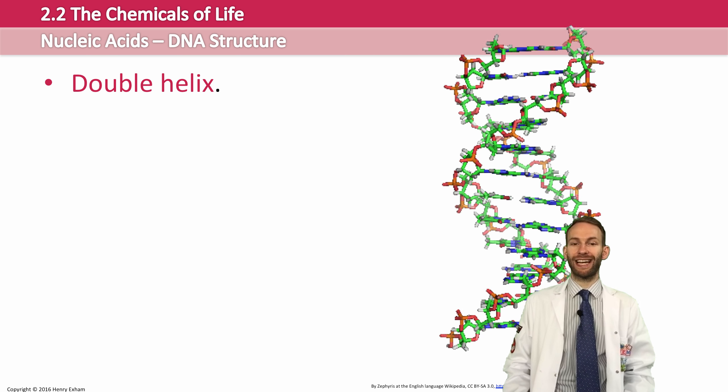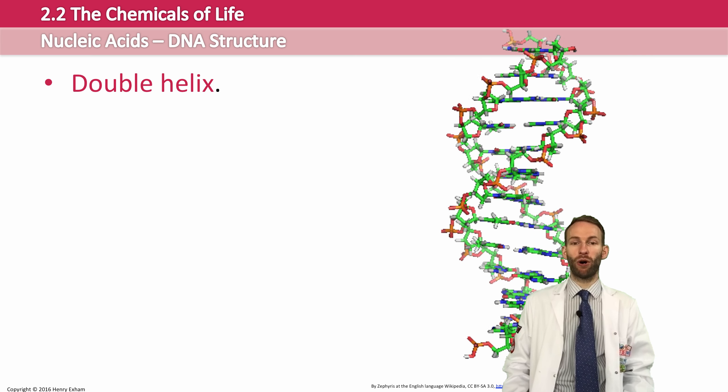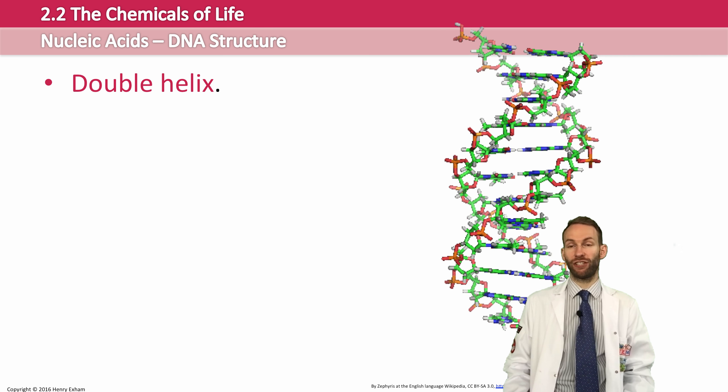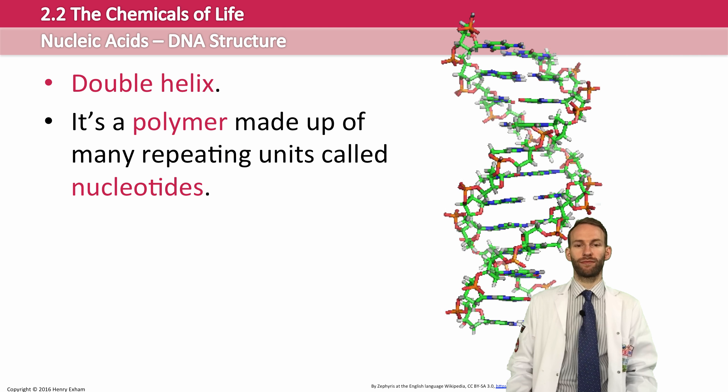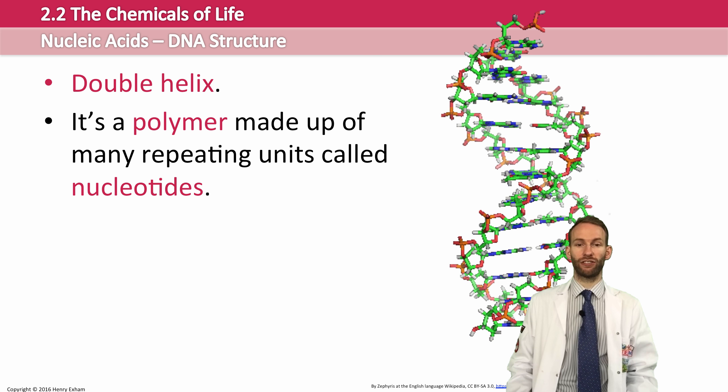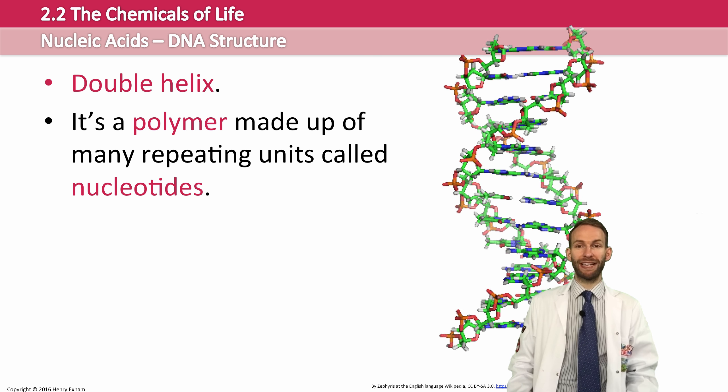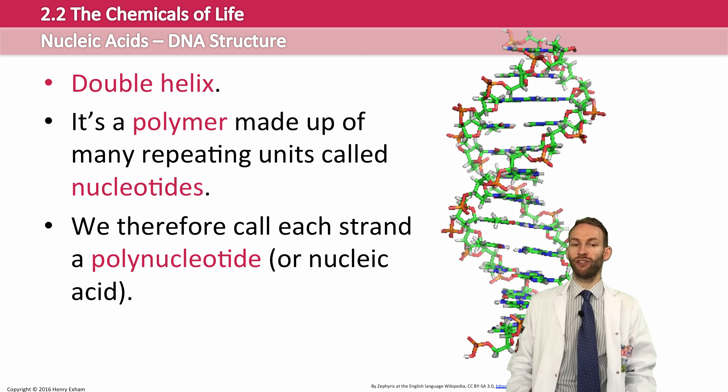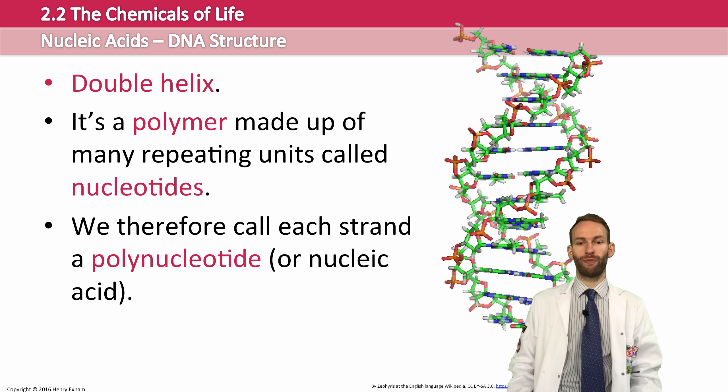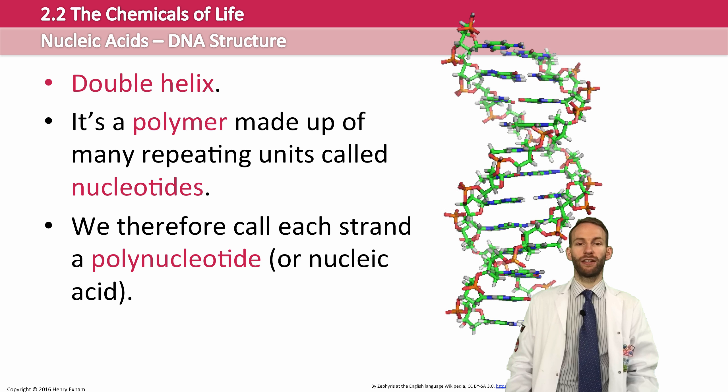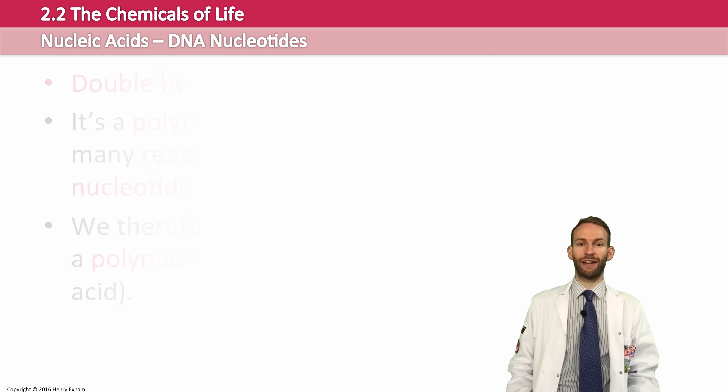And each ladder is a strand of DNA. It's a polymer made up of many repeating units called nucleotides. The nucleotides come in four different versions, and when you join nucleotides together in a long chain to make a strand, we call them polynucleotides, or this is an example of a nucleic acid.